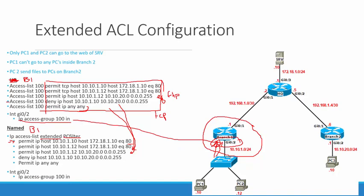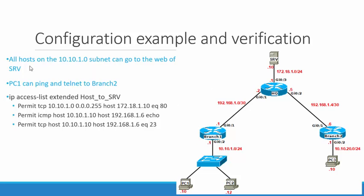So now let's go ahead and actually do the configuration and verify what it looks like. We have a really great debug command that's going to show us how our access control list is behaving. We're going to stay with our topology: all hosts on the 10.10.1.0 subnet can go to the web of the server or SRV. The server is just a router with IP routing disabled and the HTTP server enabled, so I'll be able to open a web page and get to the web of that device. PC1 can also ping and telnet to branch 2. That's it.